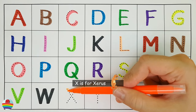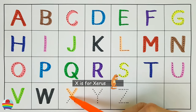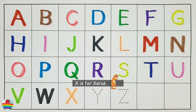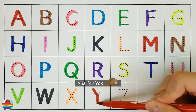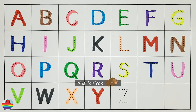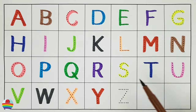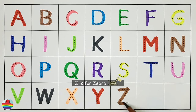X. X is for xerus. X. Y. Y is for yak. Y. Z. Z is for zebra. Z.